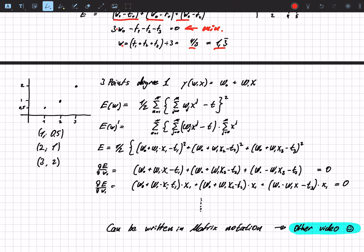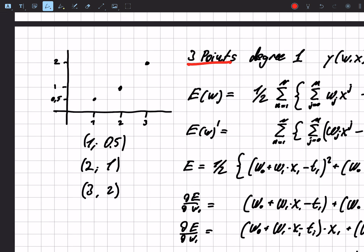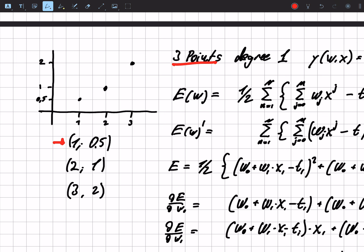But because this is a fairly simple example, I have another one for you. This time we have three points, so we have point one, this is that one, we have point two, this is this one, and we have point three, this is that one.